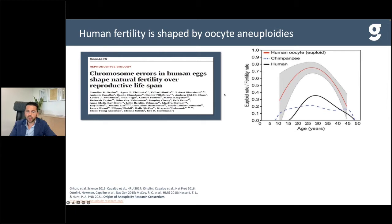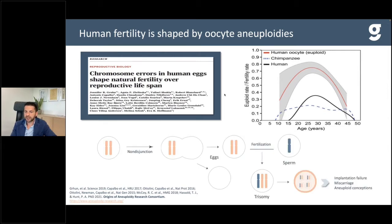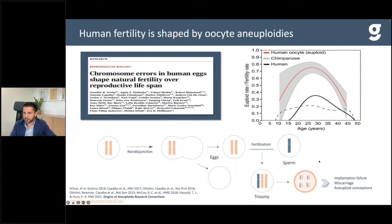When meiotic aneuploidies are present in a zygote and developing embryo, all cells are expected to carry the same chromosomal abnormality — this poses no issues diagnostically, because wherever we take the biopsy we get a good representation of the embryo's chromosomal constitution. We know that when an embryo is aneuploid due to meiotically derived aneuploidy, the outcome is well described: implantation failure, miscarriage, or in very few cases a viable aneuploid conception.